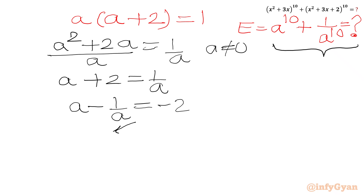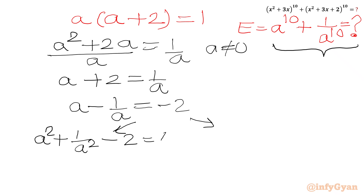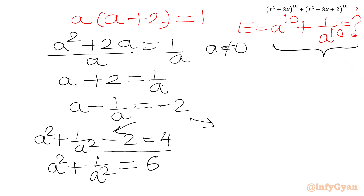Now I will consider squaring and cubing this equation. Squaring both sides of a - 1/a = -2: we get a² + 1/a² - 2·(a·1/a) = 4, so a² + 1/a² - 2 = 4. Adding 2 to both sides gives a² + 1/a² = 6.